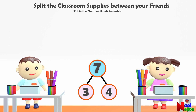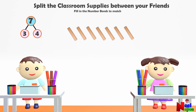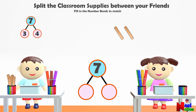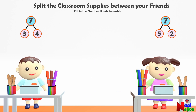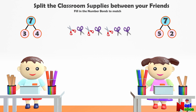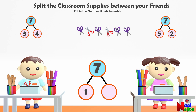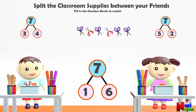Let's distribute some rulers. There are seven rulers — can you split them between your friends? I give five to Lincoln and two to Tracy. So we decomposed seven into five and two. Here comes the tricky part: I have seven scissors. If I give one to Lincoln, how many scissors would Tracy get? Tracy gets six! You are right! Can you fill in the number bonds? Seven can again be decomposed into six and one.